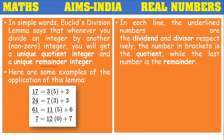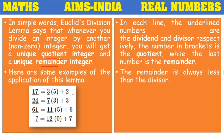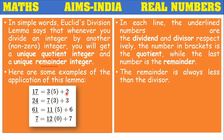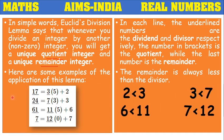In each example, the dividends are 17, 24, 61, and 7; the divisors are 3, 7, 11, and 12; the quotients are 5, 3, 5, and 0; and the remainders are 2, 3, 6, and 7. Observing these examples, the remainder 2 is less than divisor 3; remainder 3 is less than divisor 7; 6 is less than 11; and 7 is less than 12. In all these examples, for two numbers a and b, we find unique q and r where r is always less than the divisor b, proving Euclid's Division Lemma.